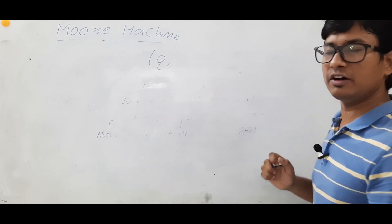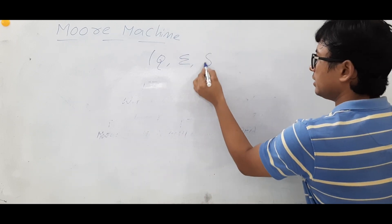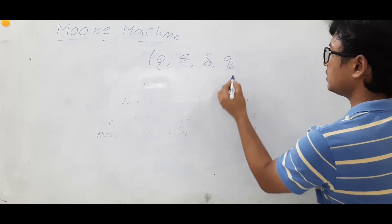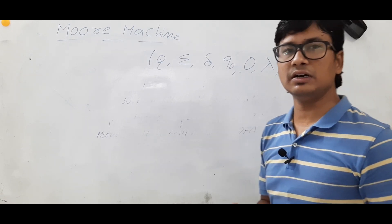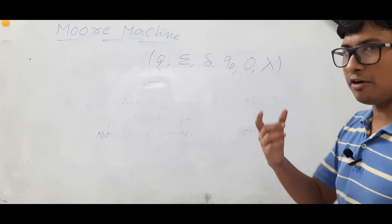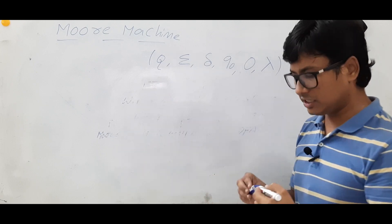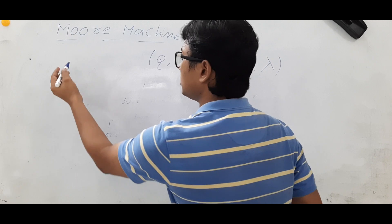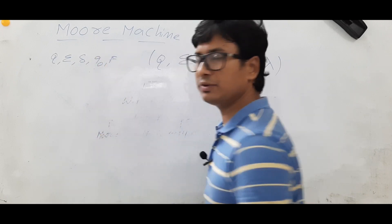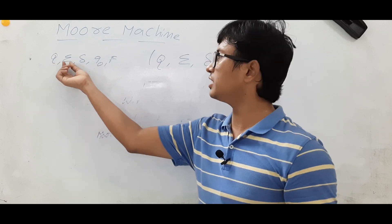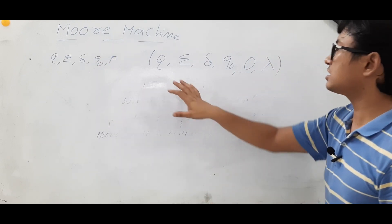Just as we represented NFA and DFA, the Moore machine can be represented with a tuple. We have Q, sigma, delta, Q-naught, and additionally O and lambda. If you see the DFA representation, we have five things: set of all states Q, input alphabets sigma, transition function delta, initial state Q-naught, and final state F. We have done enough discussion on DFA representation already.